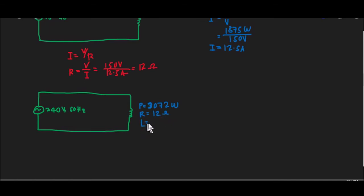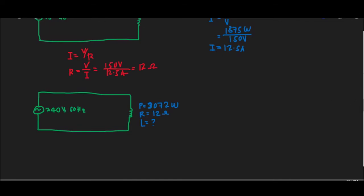To solve for the inductance, we need to find the impedance first. To find the impedance, we use the current. By getting I, we can solve for the impedance Z. From the impedance and the resistance, we can solve for the inductive reactance XL. Then, from the inductive reactance and the frequency, we can solve for the inductance L.